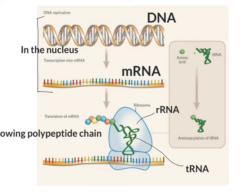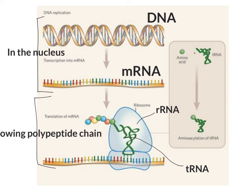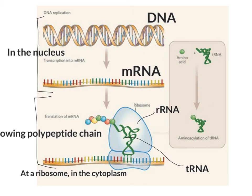And all of this down here is going to be happening out in the cytoplasm at a ribosome. Ribosomes are out in the cytoplasm, so you can say either one — both are true. This is our central dogma: the flow of information from DNA to RNA to proteins.